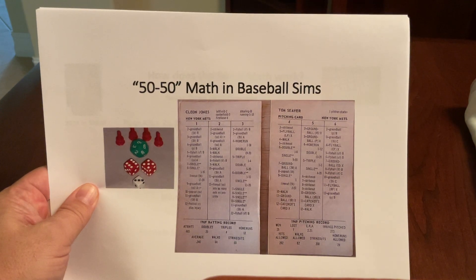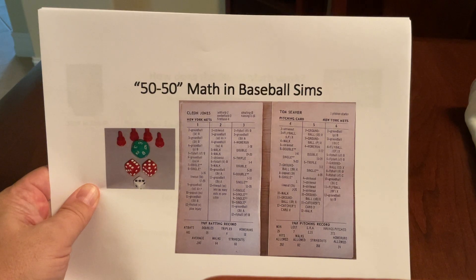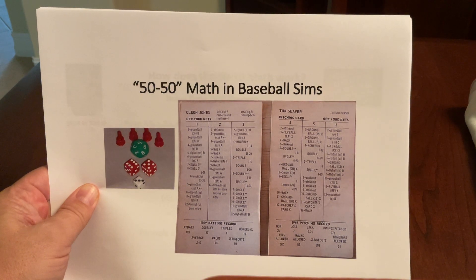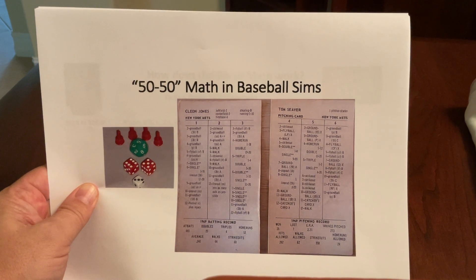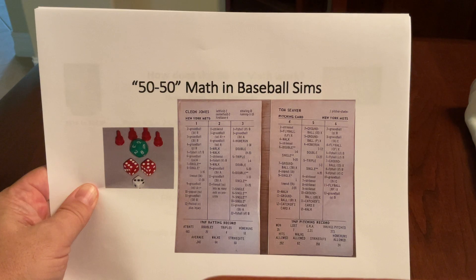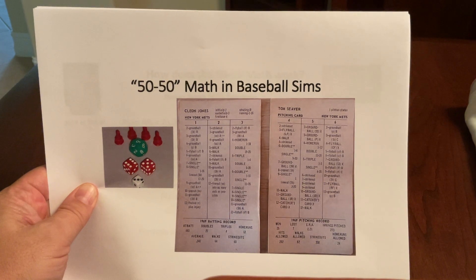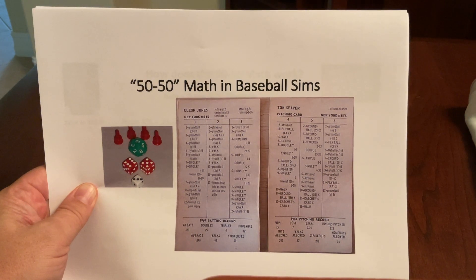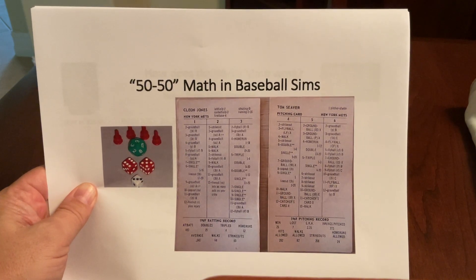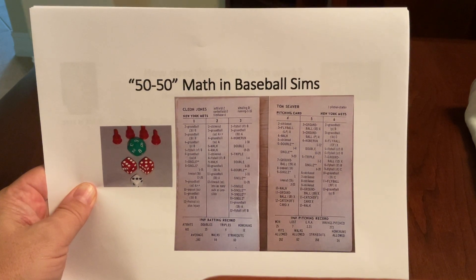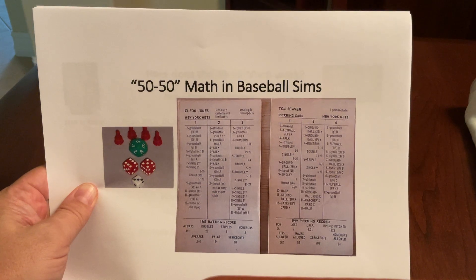The topic of today's video is 50-50 math in baseball sims. This is a topic that many of you are very familiar with. A lot of baseball sims have what's called a 50-50 engine, which simply means that on any given plate appearance, a batter has a 50% chance of controlling the at-bat, or the pitcher has a 50% chance of controlling the at-bat.